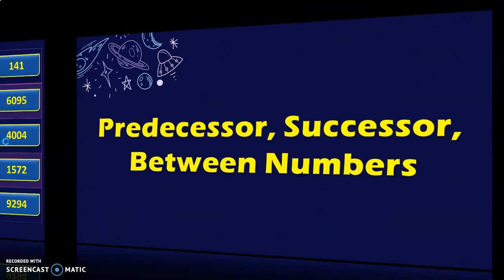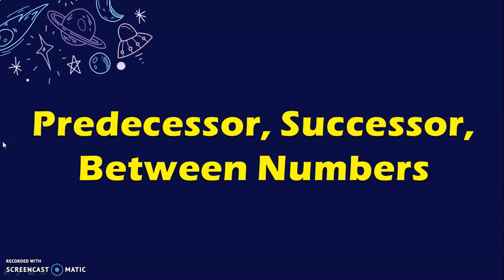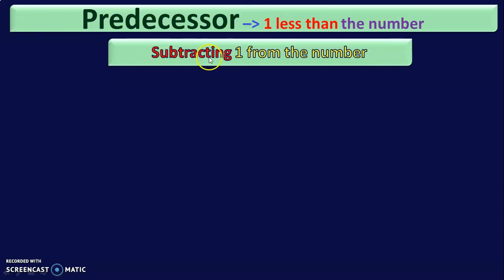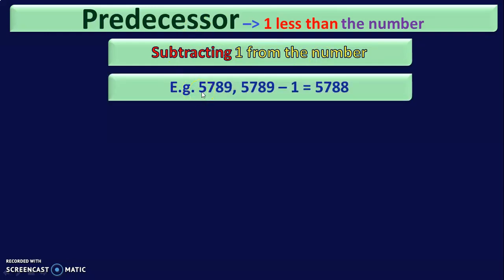Let us move on to the next topic: predecessor, successor, and between numbers. Predecessor means 1 less than the given number. To arrive at the predecessor of a number, we should subtract 1 from the given number. The example given is the 4-digit number 5789. To find the predecessor of 5789, we subtract 1: 5789 minus 1 gives you 5788. So 5788 is the predecessor of 5789.